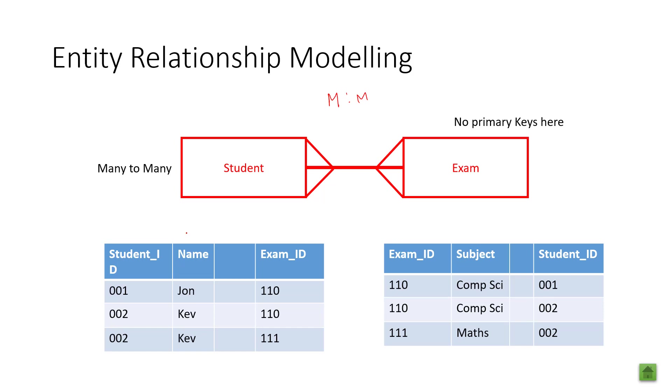The issue that we have here is that in the exam ID table, exam ID 110 is computer science and that is sat by student 001. This is my foreign key because it's a primary key over in the student table. Exam ID is a foreign key and exam ID is a primary key in the exam table. What you've got is tables that have linked themselves together. And this is never a good situation.